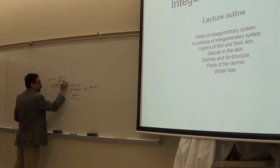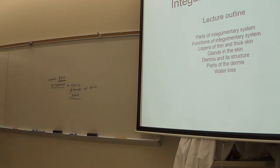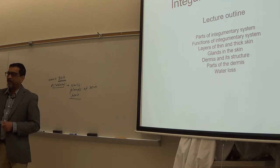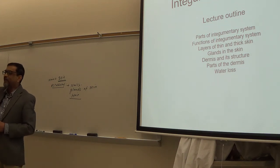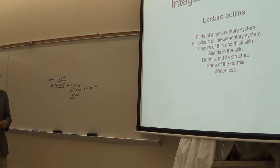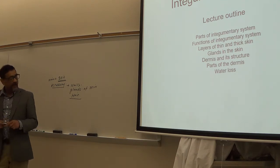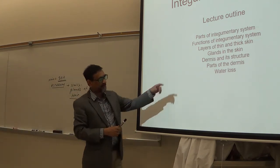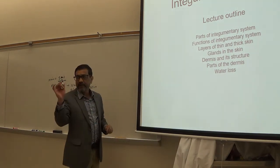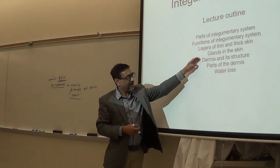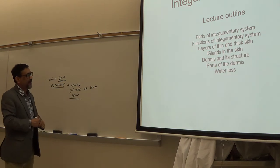We will mostly talk about the skin. We will see the layers of the skin. Skin has two layers: epidermis and dermis — outer epidermis, inner dermis. Then we will talk about different types of skin: thin skin and thick skin. We will see the structure of thick and thin skin. Then we will talk about the glands in the skin — sweat and sebaceous glands. We will talk about the inner layers, dermis, and water loss.